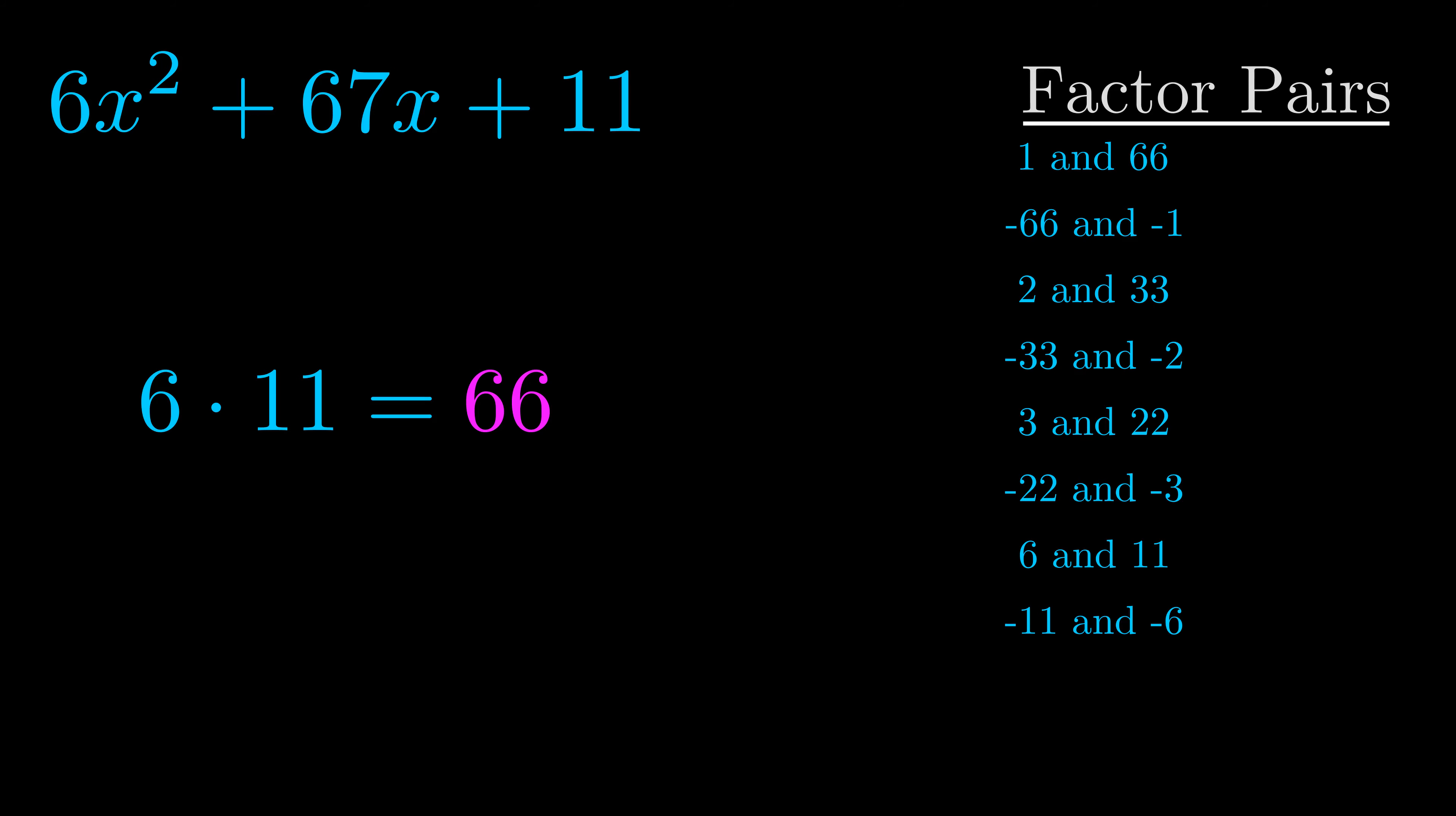The b value is the coefficient on the x term. That's the middle term, the one that we haven't done anything with yet. And really, this is the only factor pair that we need.